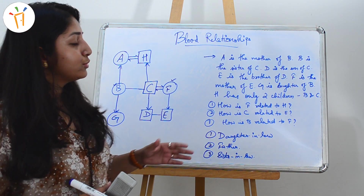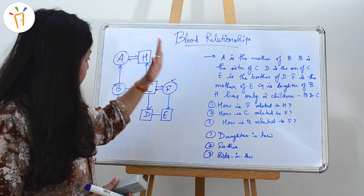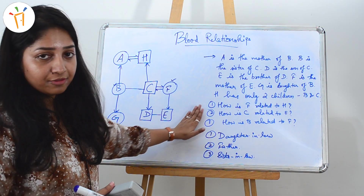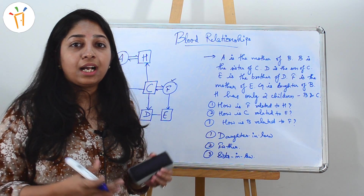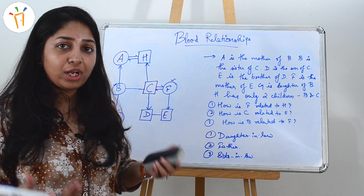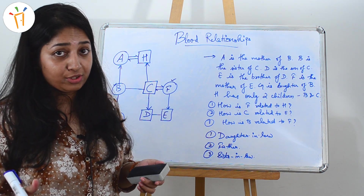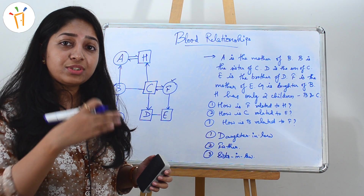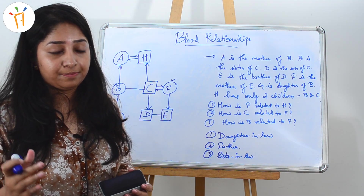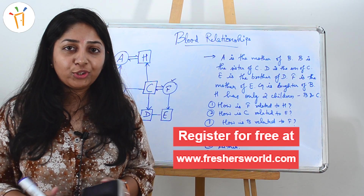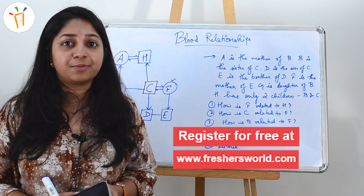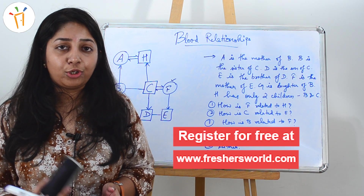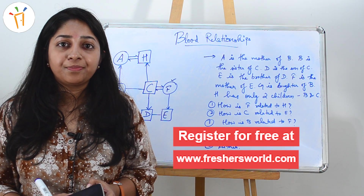You saw how easily by drawing this tree diagram we were able to deduce all three answers. By seeing these two problems I think you have found confidence in yourself to solve more such questions, because you can use these simple symbols to reduce any type of blood relationship question. Hope you liked this video — please like and subscribe to our channel. For those looking for a job, please log on to freshersworld.com and register. Bye and have a good day!